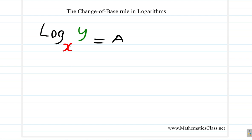Now, rewrite this in index form and see what happens. Remember your index form: log of 1,000 equals 3, the base is 10, so 10 to the 3 is equal to 1,000. The log of 1,000 equal 3 is in log form; 10 to the 3 equal 1,000 is in index form. Follow that pattern.